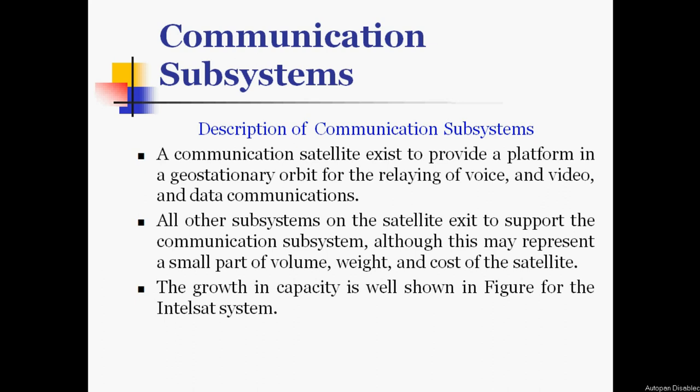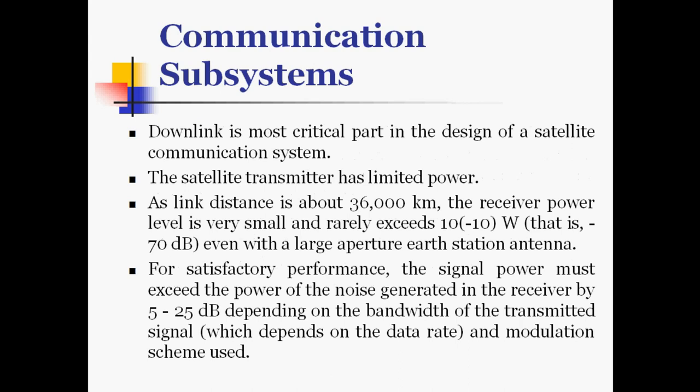For the satellite subsystems, we have seen the attitude and orbital control monitoring system, then telemetry tracking command and monitoring systems, and the power systems. The other major system of the satellite is the communication subsystem. A communication satellite exists to provide a platform in geostationary orbit for the relaying of voice, video, and data communications. All other subsystems on the satellite exist to support the communication subsystem, although this may represent only a small part of the volume, weight, and cost of the satellite. Downlink is the most critical part in the design of satellite communication systems. The satellite transmitter has limited power, and the link distance is about 36,000 km, so the receiver power level is very small, rarely exceeding 10⁻¹⁰ Watt, which is near about minus 70 dB, even with a large aperture earth station antenna.